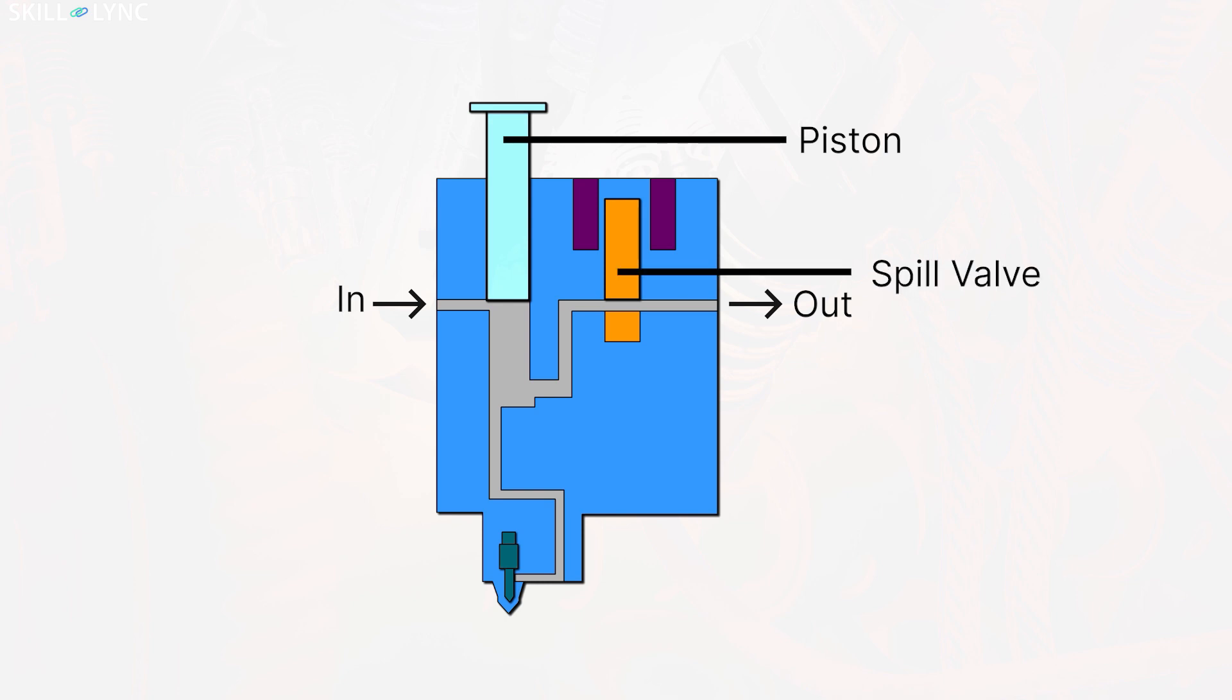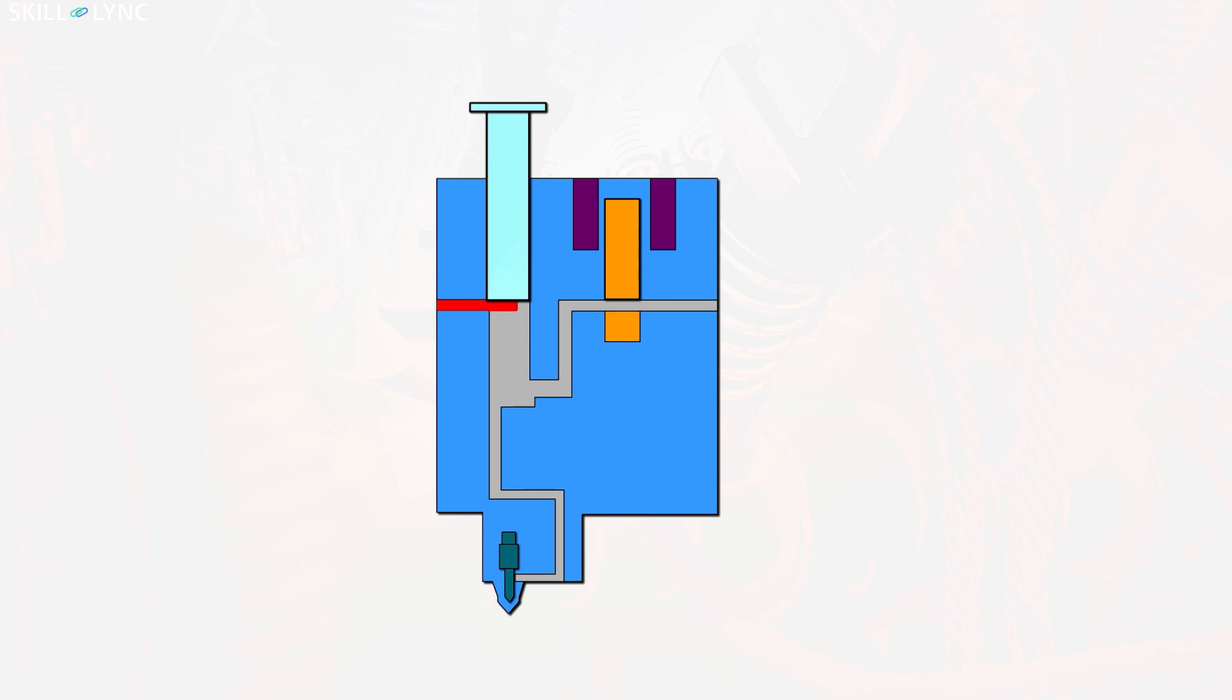A low pressure fuel pump supplies the fuel to the injector assembly through the fuel passages. The fuel enters the pump during the upward motion of the plunger and returns through the spill control valve when the plunger moves down.